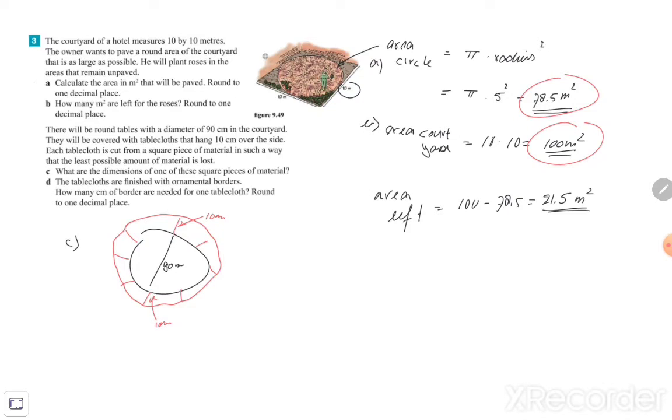What are the dimensions of one of those square pieces of material? If we make a square of it, we just make the maximum of my circle. Because this is 10, this is 90, and that's 10, then the dimensions need to be 110 centimeters by 110 centimeters. That's exercise C.